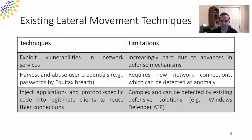The third approach is to inject application and protocol-specific code into a legitimate client application to reuse its sockets. The injected code uses these sockets to send malicious queries to the remote endpoints. The problem with this approach is that many existing security systems such as Windows Defender ATP can detect and prevent existing process injection techniques.